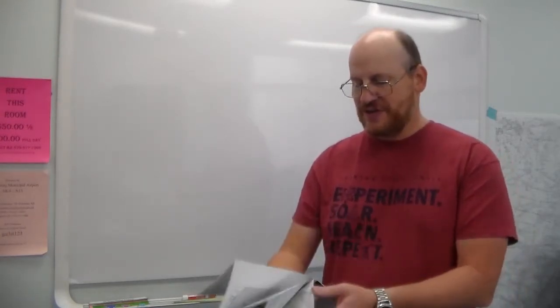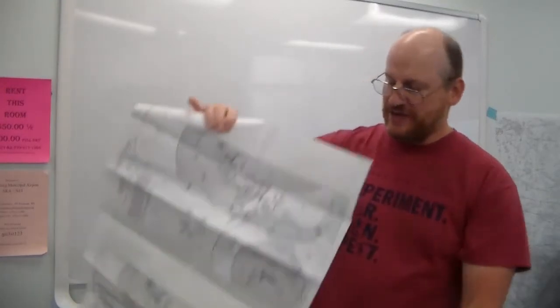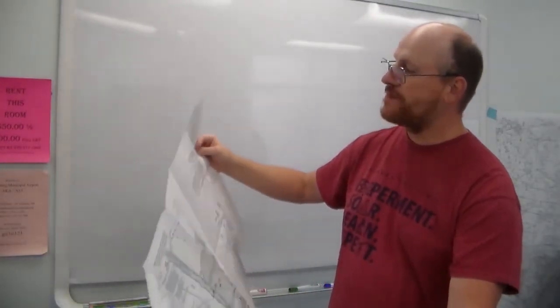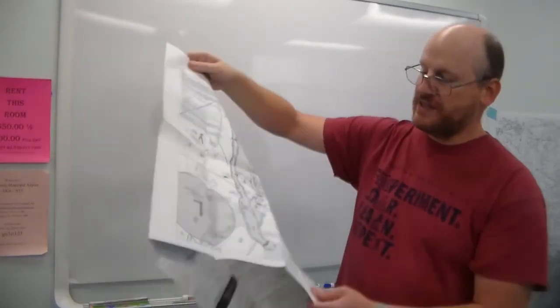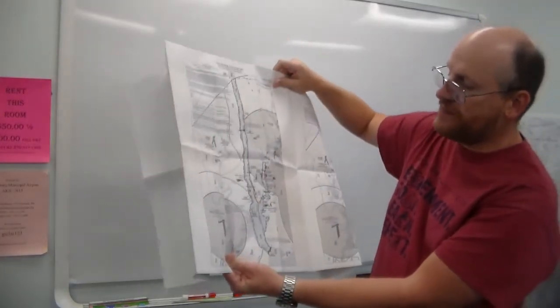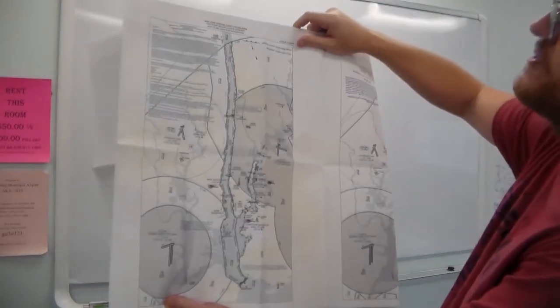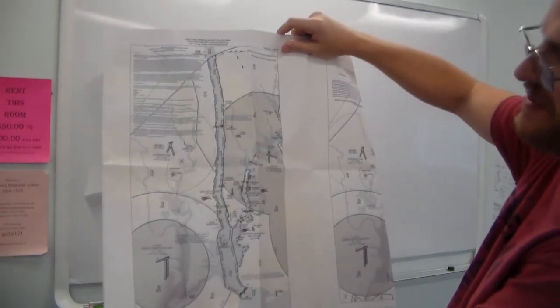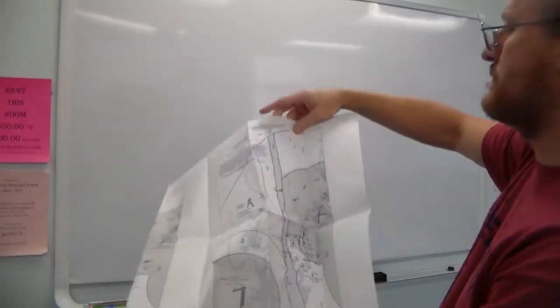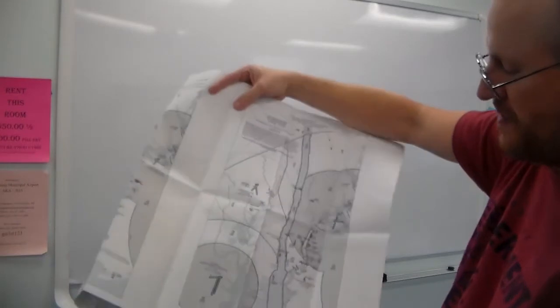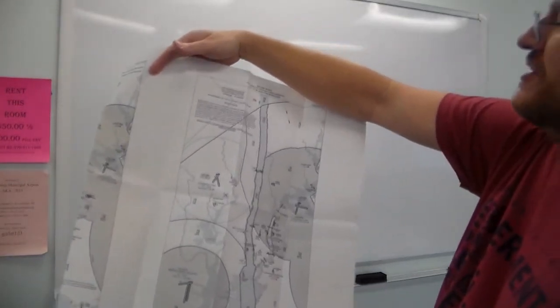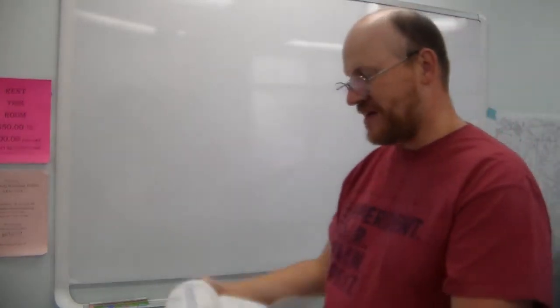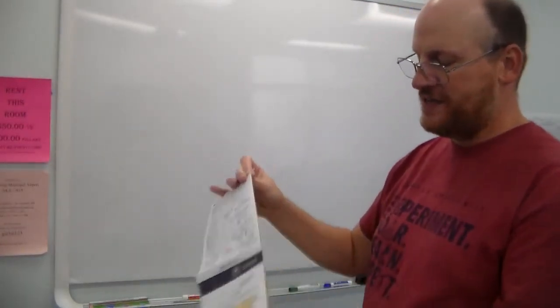Another thing that terminal area charts will do for you, if I unfold this guy and look on the back, I'll see a little bit about New York special flight rules area. This is the special flight rules area if you want to go up and down the Hudson. Here is another little chart that goes along with that for a VFR transition. Those kinds of things you will often find on the backside of terminal area charts.